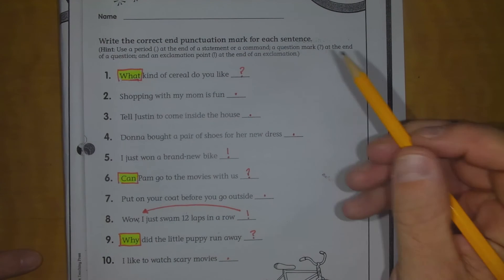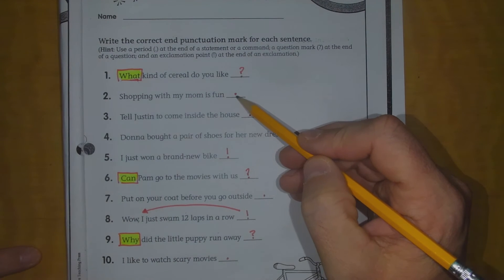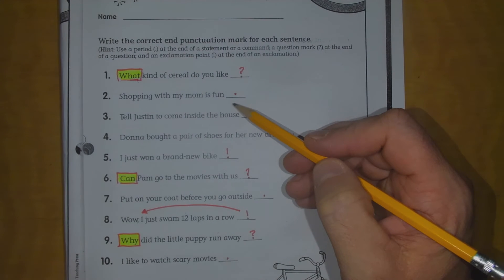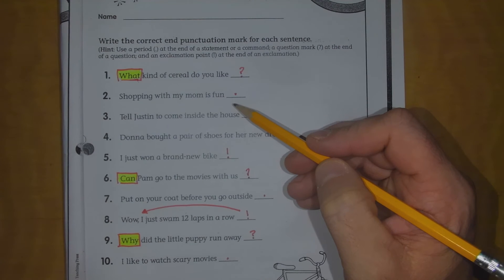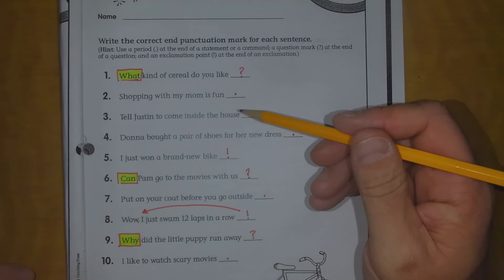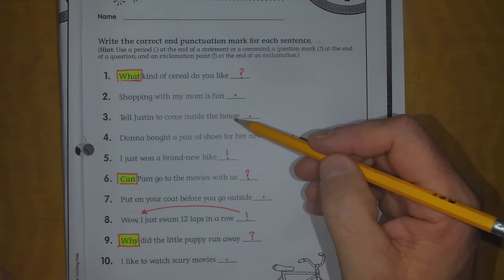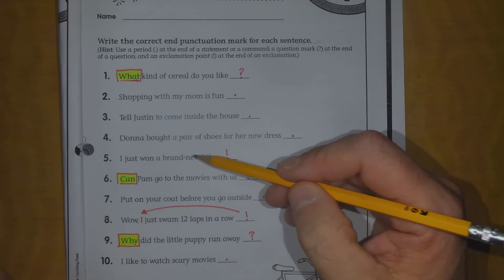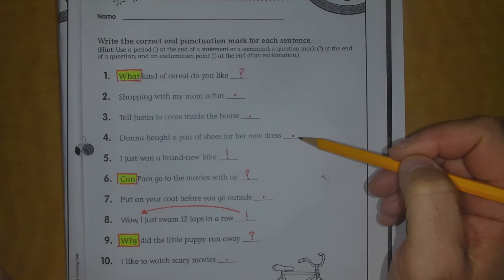Number two says shopping with my mom is fun. I call that a statement because it does not sound exclamatory. There's no wow in there. There's no this is amazing. It's just a statement. Shopping with my mom is fun. Tell Justin to come inside the house would be a command. Donna bought a pair of shoes for her new dress is also a statement.